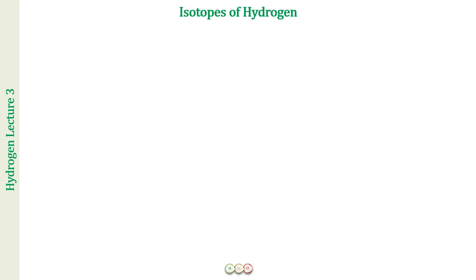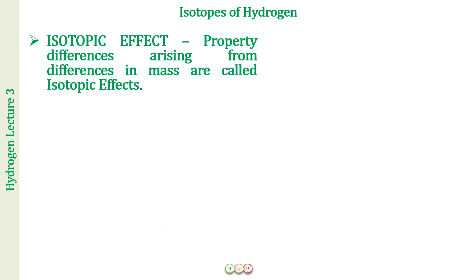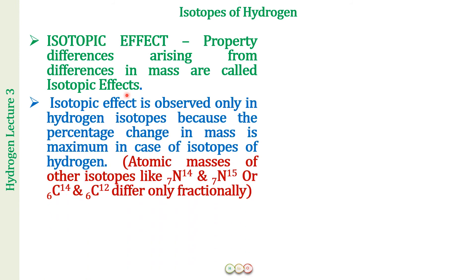The property differences arising from differences in mass are called isotopic effects, and we see these isotopic effects most prominently in hydrogen because the percentage change in mass is maximum in its isotopes. From protium to deuterium to tritium there is a doubling and tripling of the mass, whereas for other elements — for example nitrogen N-14 and N-15, or carbon C-12 and C-14 — the atomic masses differ only fractionally. Please remember: isotopic effects are seen most commonly in the isotopes of hydrogen.